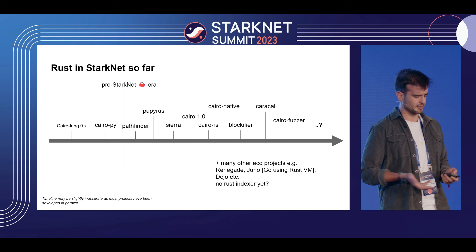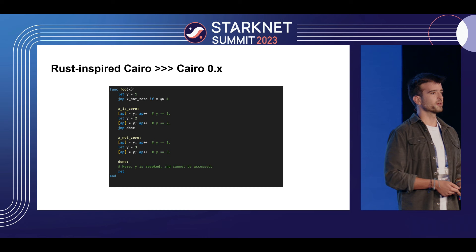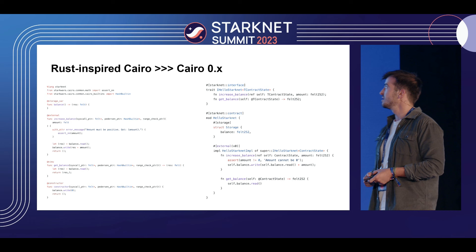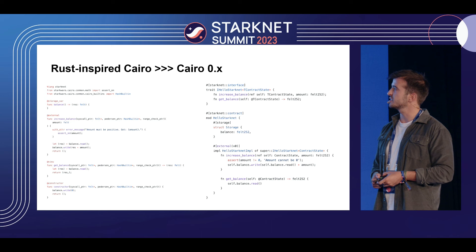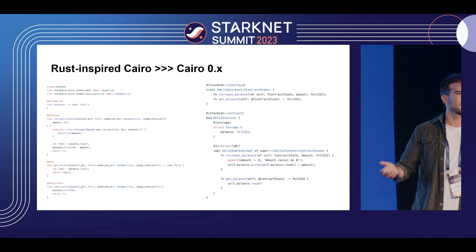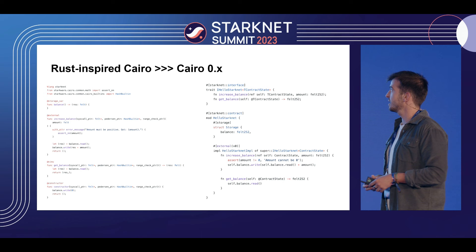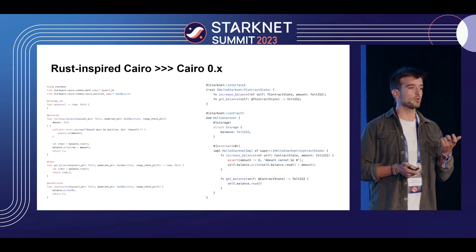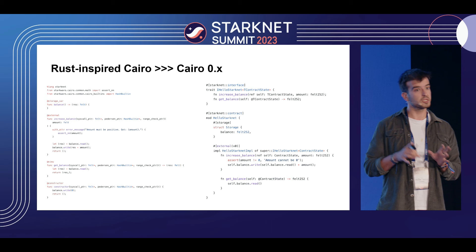So this is what we had in Cairo 0.x — I cannot bear to look at it. Then we got Cairo 1.0, which I realize might be hard to read on the slides. On the left side you declare storage variables as functions, there's a res_felt argument, it's very verbose. It tries to be Python but has a weird function declaration syntax, felt* pointer — what is all of this? On the right, every contract has an interface defined as a trait, the storage is nicely encapsulated in a struct. It starts to get better.